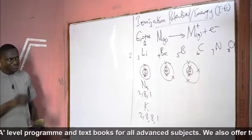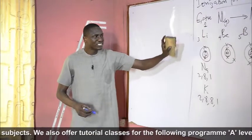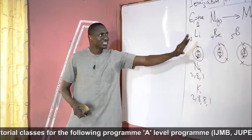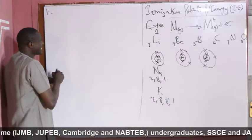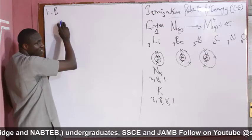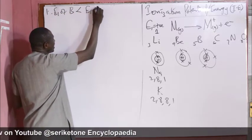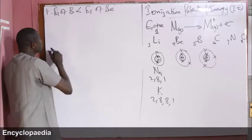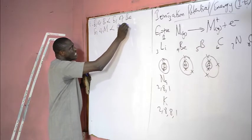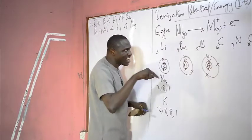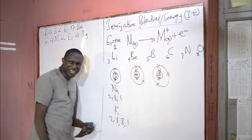That is the general view. However, there are some reservations — some inversions to what we have in the general variation of ionization potential both across the period and down the group. Number one, we discover that the first ionization energy of boron is less than the first ionization energy of beryllium. Likewise, the first ionization energy of aluminum is less than the first ionization energy of magnesium, despite the general rule that ionization energy increases across the period.